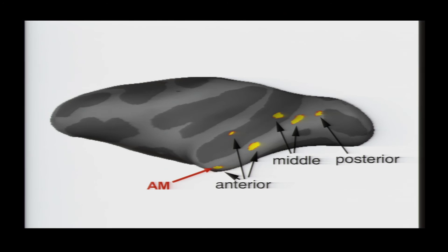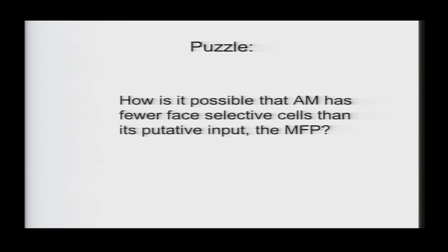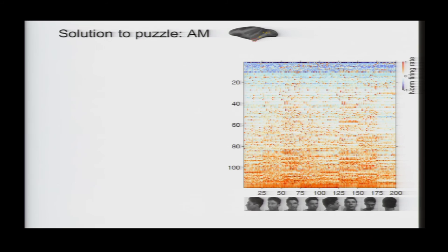So, next, we put our electrode in the most anterior face patch in the temporal lobe. And, again, we found that there was a smaller percentage of face-selective cells than in the middle face patch. And, again, this raised a puzzle. And the answer to this puzzle also became clear with this set of 200 faces at different views, but in a different way.